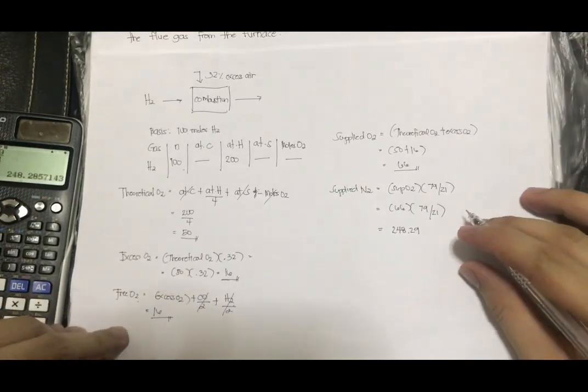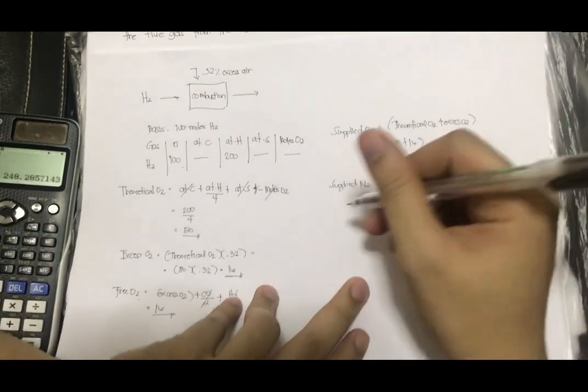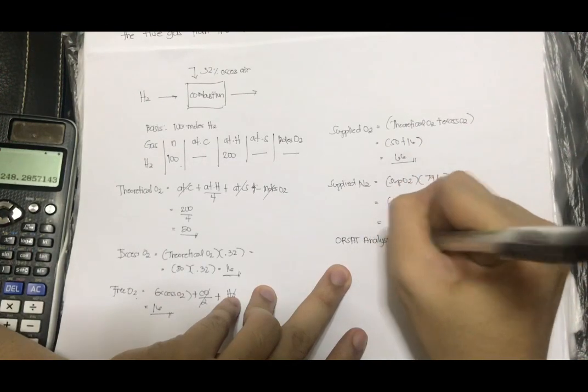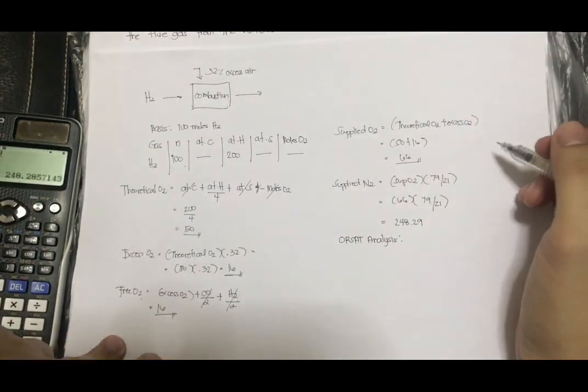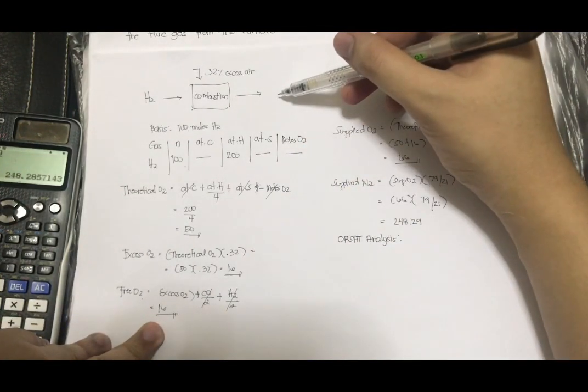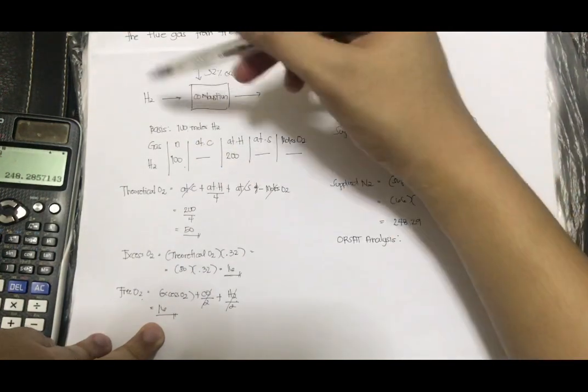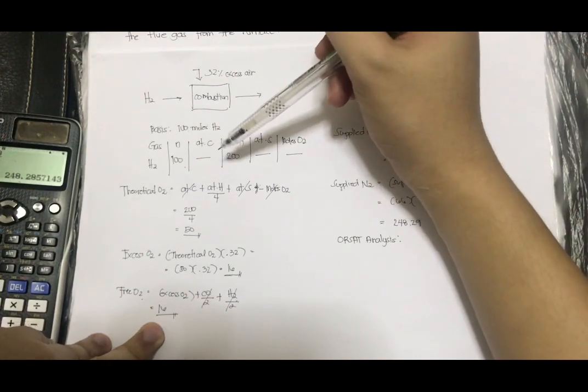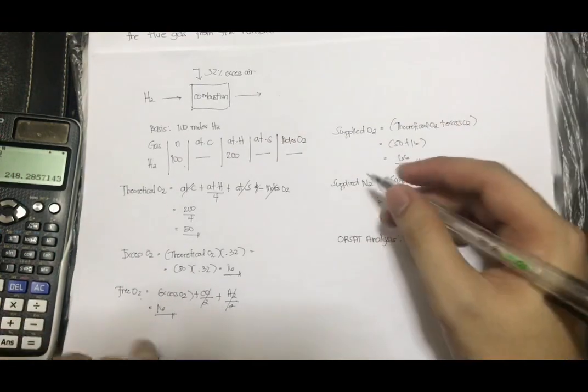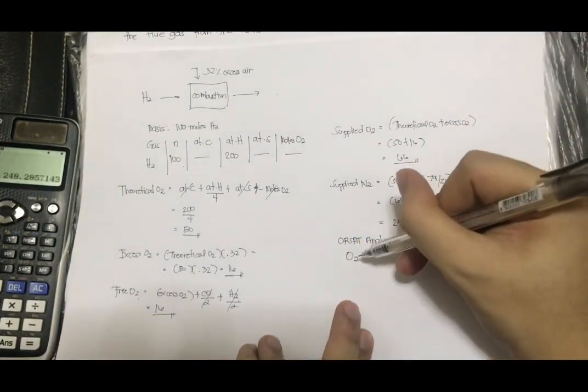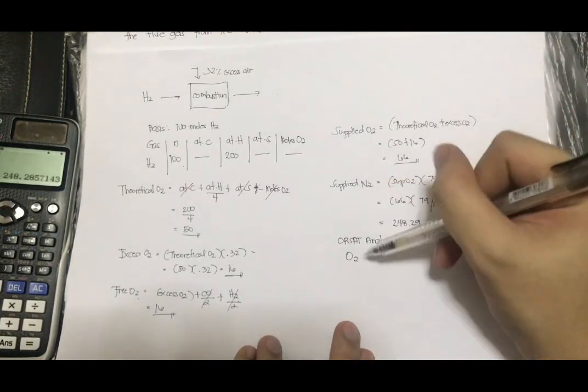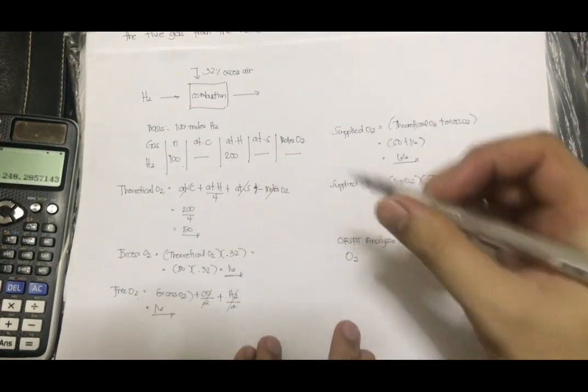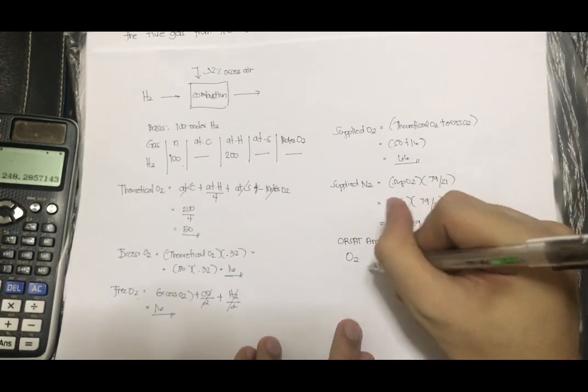So now, we can get our O2. Like I said earlier, since this is complete combustion, our products will only be CO2, O2 and N2. Since the fuel is only H2, we don't have carbon, so automatically CO2 will be removed and what remains are only O2 and N2. So what's our O2? Where will we get this? Always remember that the O2 in Orsat analysis is always the free O2. So our free O2 is 16.